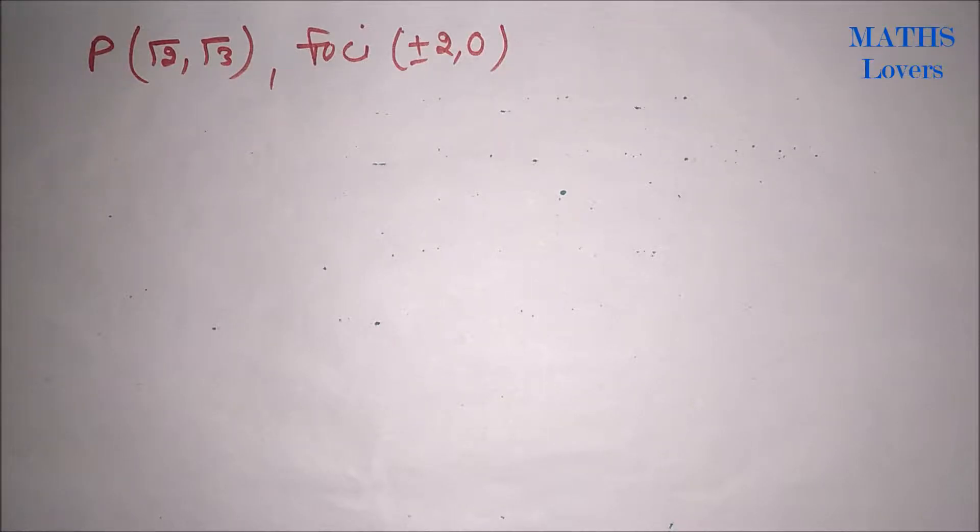Hello friends, in this question, a hyperbola passes through the point P(√2, √3) and foci at (±2, 0) is given.